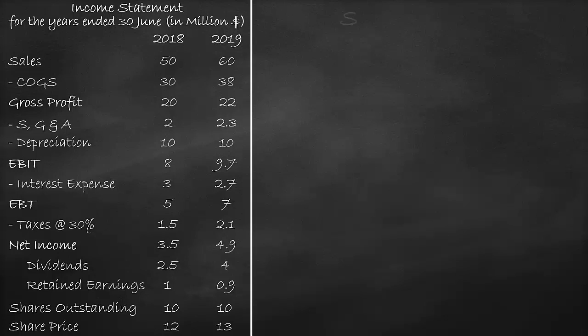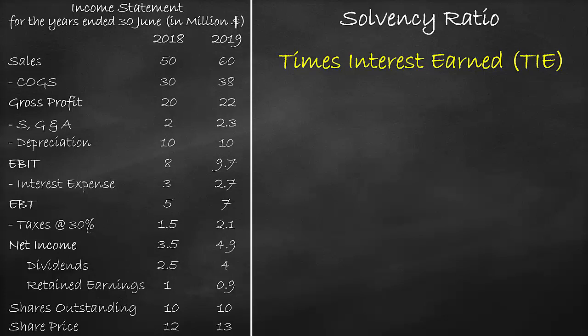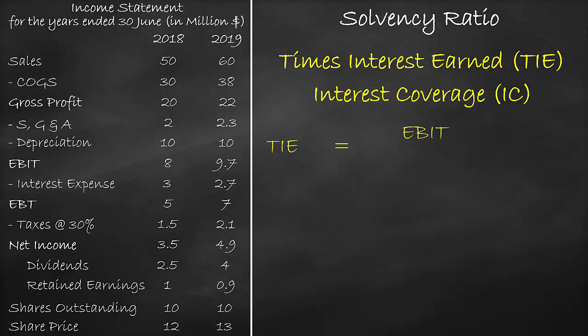An example of the solvency ratio is the times interest earned ratio. The times interest earned ratio is the British terminology; the American terminology is the interest coverage ratio. It is calculated as earnings before interest and tax divided by interest expense.